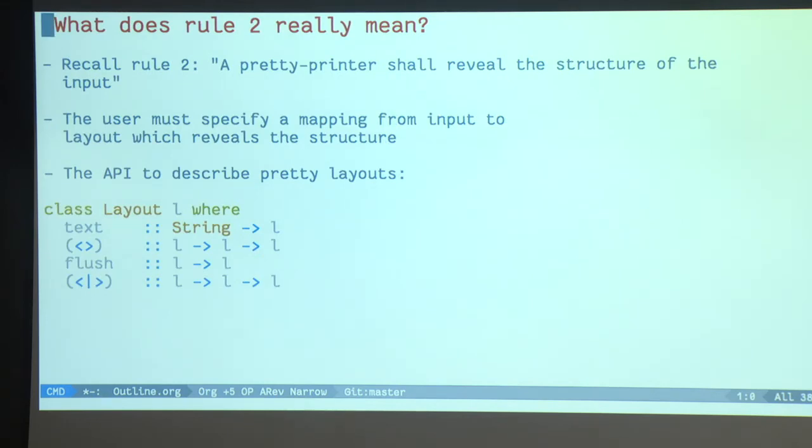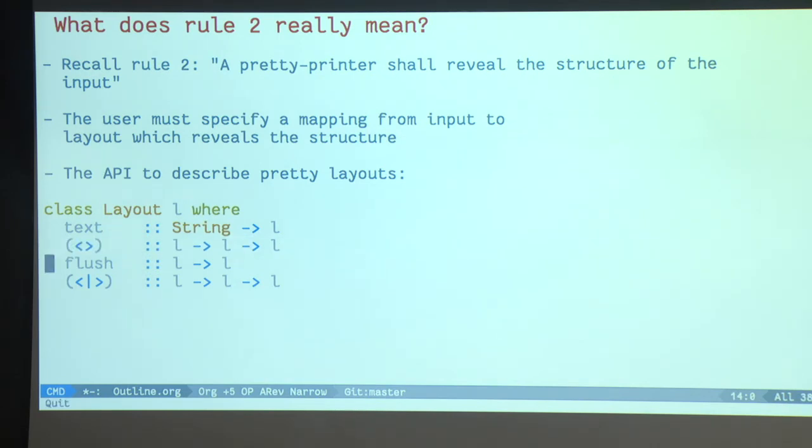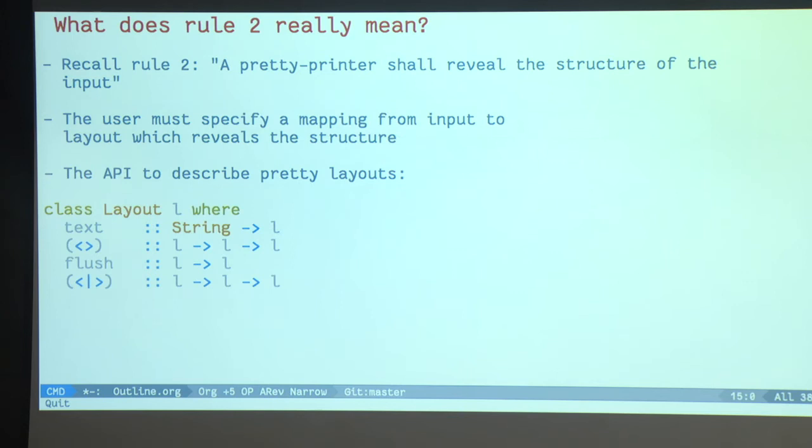Problem is rule two. What is it to reveal the structure? And here I use the DSL technique. You let the user, you give the user a suitable DSL and you let them explain what they want. And here is the API I give them. You can embed the string. Not so surprising. You can have horizontal concatenation. And I'm going to explain in a second what that means. You can add an empty line at the end. And you have this junction between two layouts. So you have two possibilities to reveal the structure.